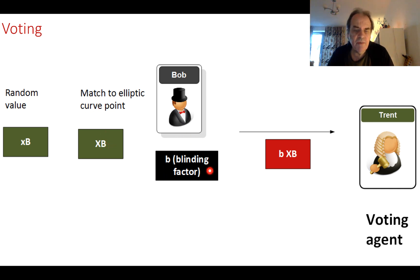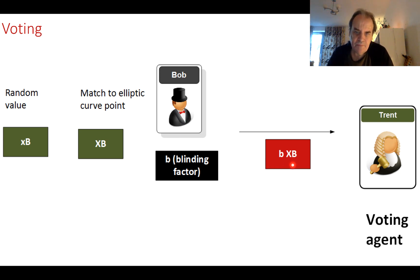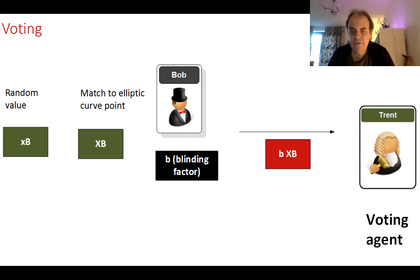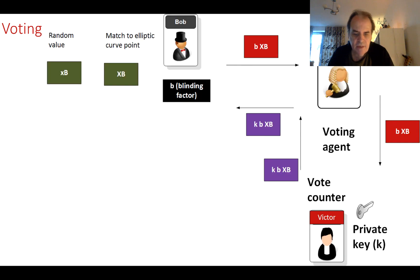Bob creates a blinding factor: a random number b. He then multiplies b by the elliptic curve point to give b times X_b — a point on the elliptic curve. This blinded value is then given to the voting agent. Alice and Carol do the same, each with their own blinding factor, producing different points on the elliptic curve.